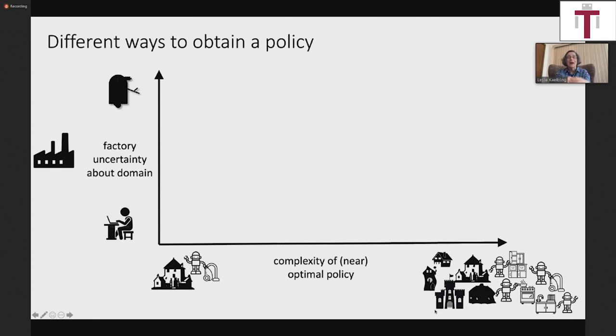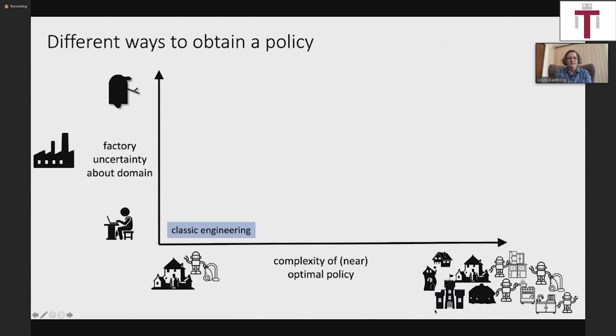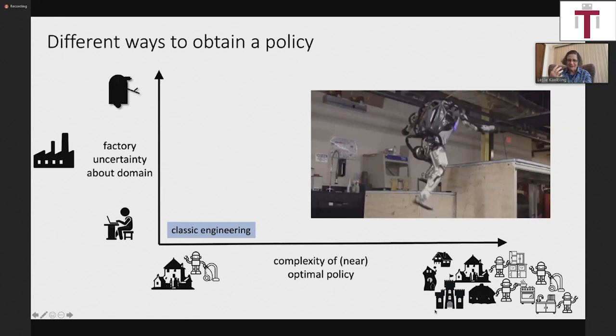We have several ways of approaching these problems. Classical engineering is awesome — it lets Atlas do parkour. There's a lot you can do by understanding your problem well, understanding science and math, and writing down good control structures. There's another approach that occupies the same niche — where there's a reasonably clear specific thing you're supposed to do and you know everything about the problem — and that's actually to use reinforcement learning. It seems funny: why would you ever use reinforcement learning when you know everything about the problem?